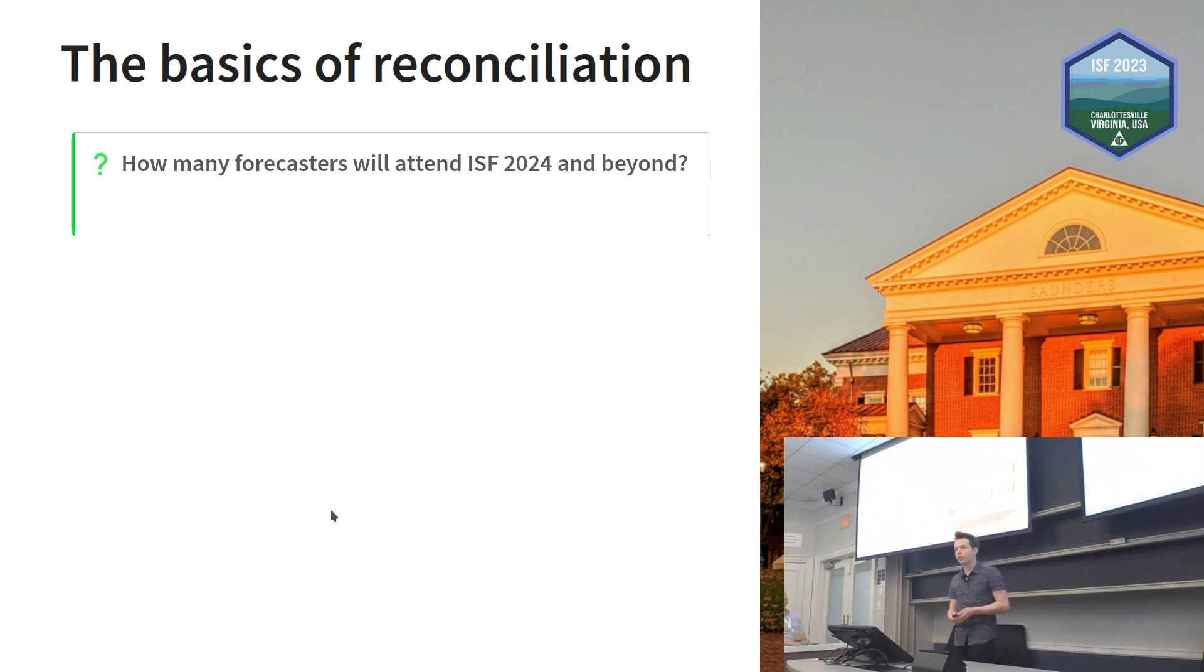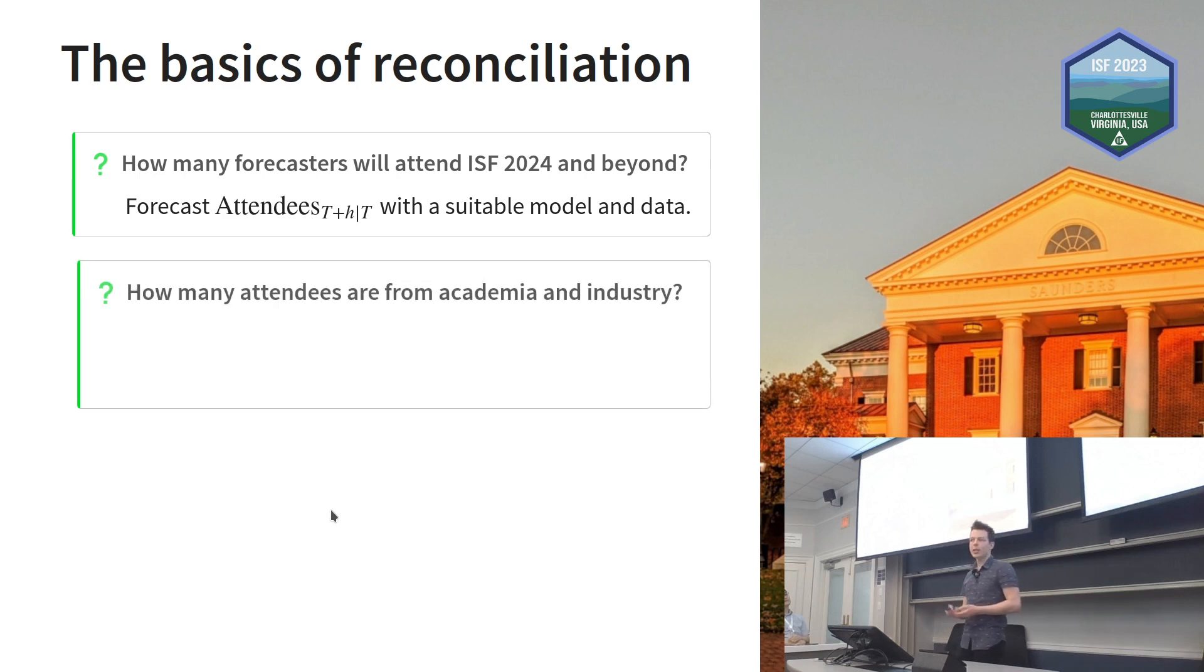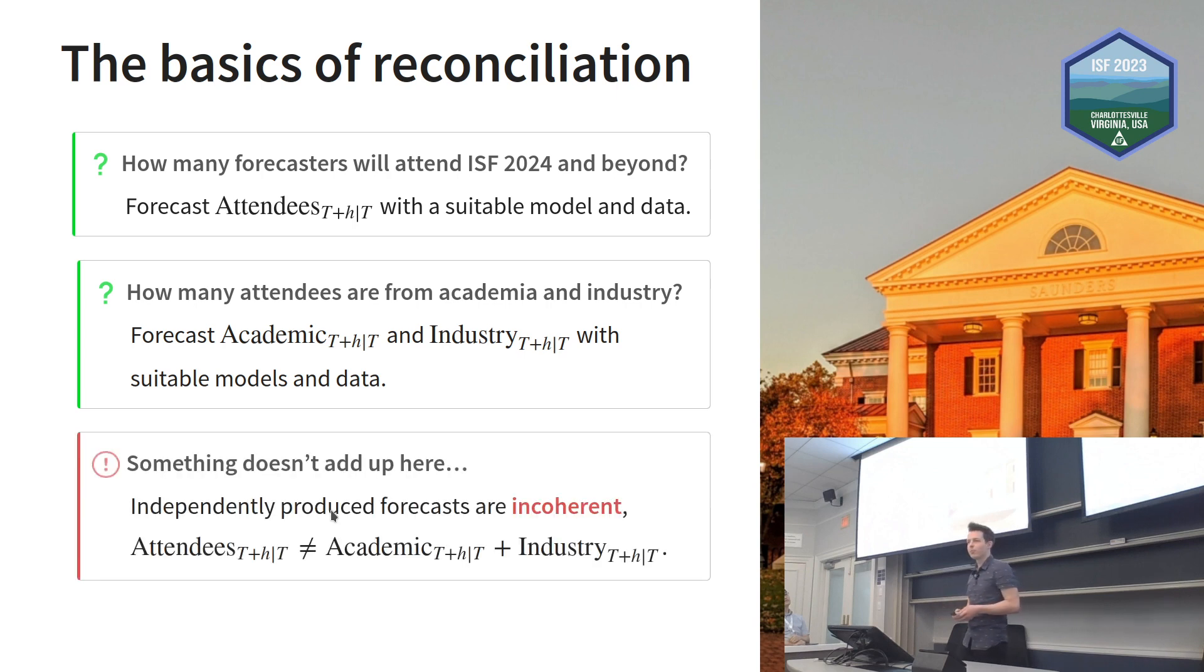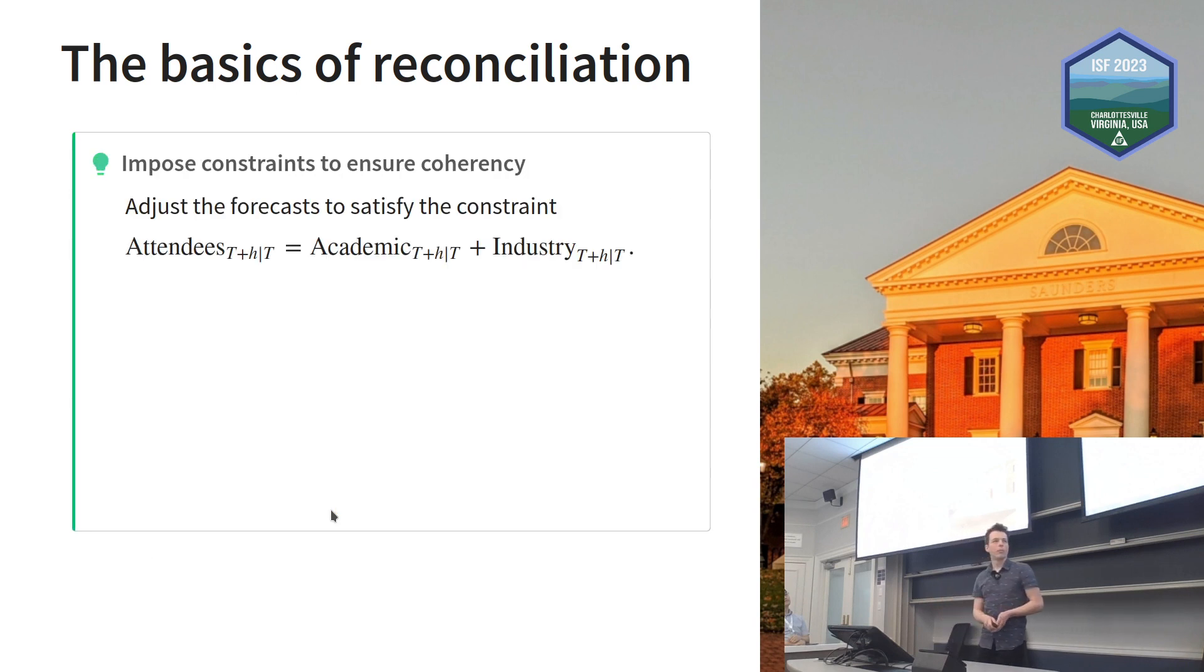Let's consider how many forecasters we expect to attend next year's ISF and beyond. You can forecast future attendees using your favorite ETS or ARIMA or more sophisticated models. But how many attendees will be from academia and industry? You can forecast those independently, but there's a problem. Something doesn't add up. Because we've produced them independently, they're not coherent. The sum of the parts will not equal the total.